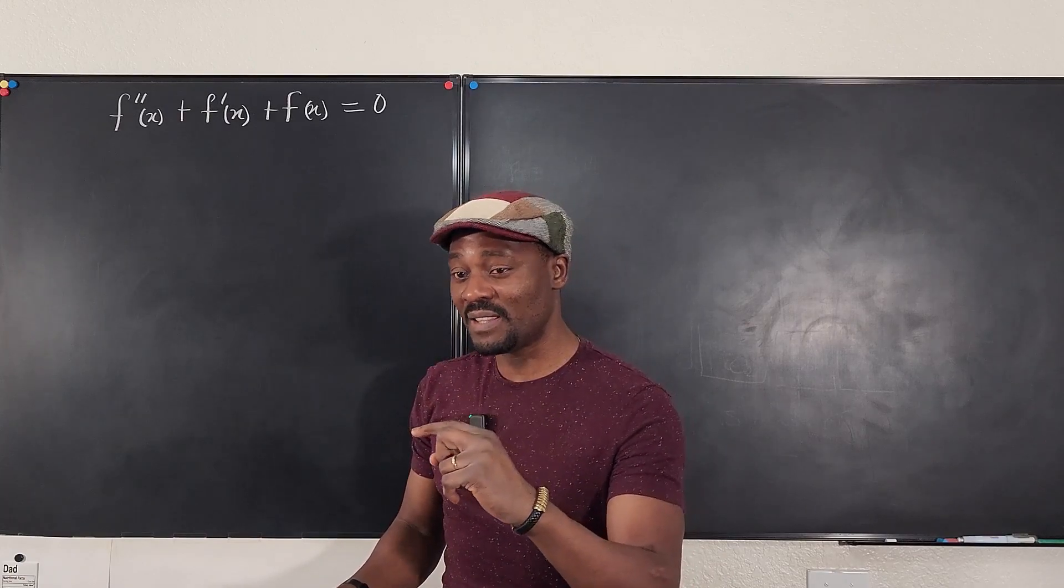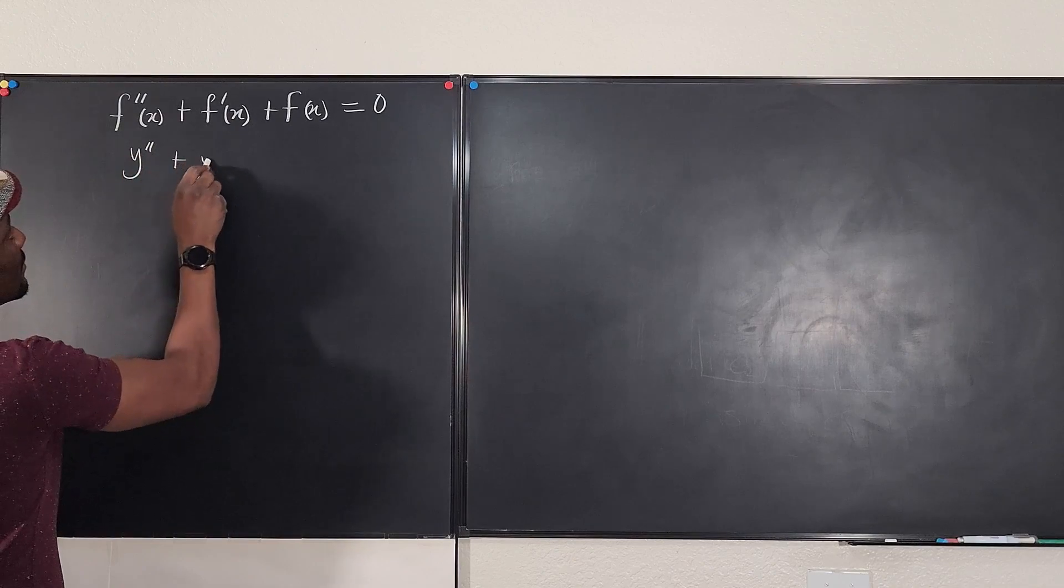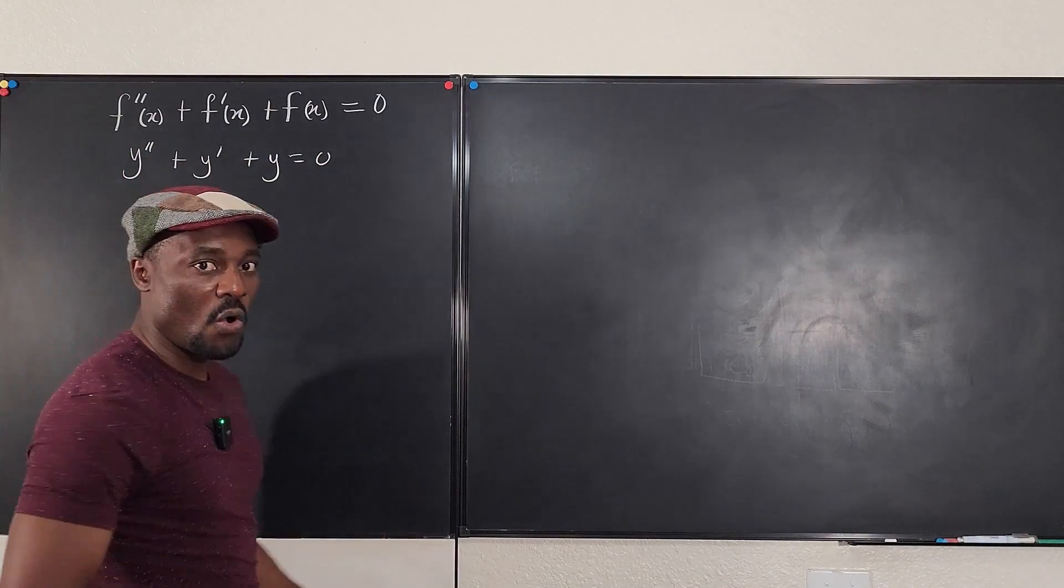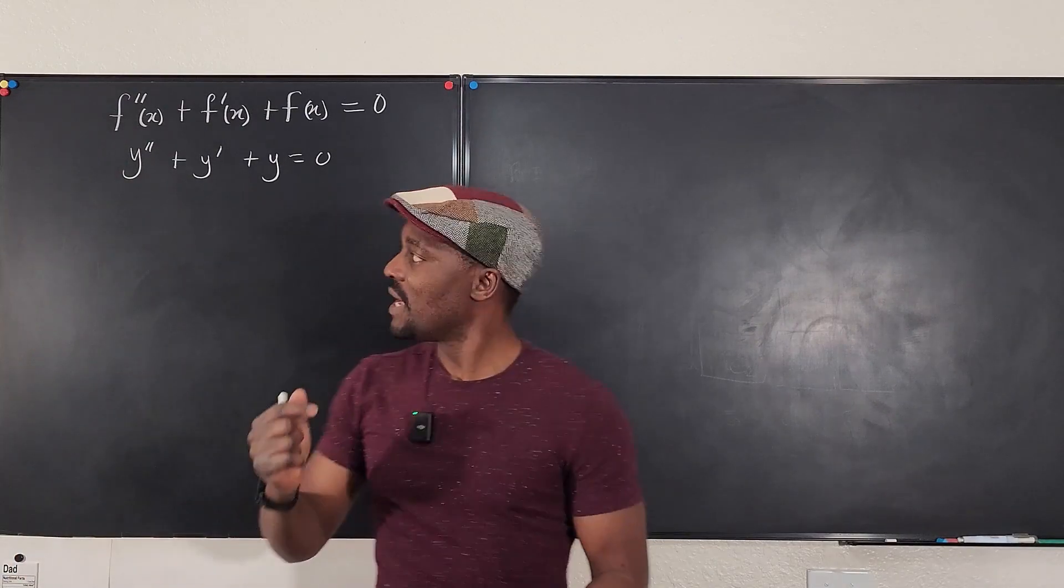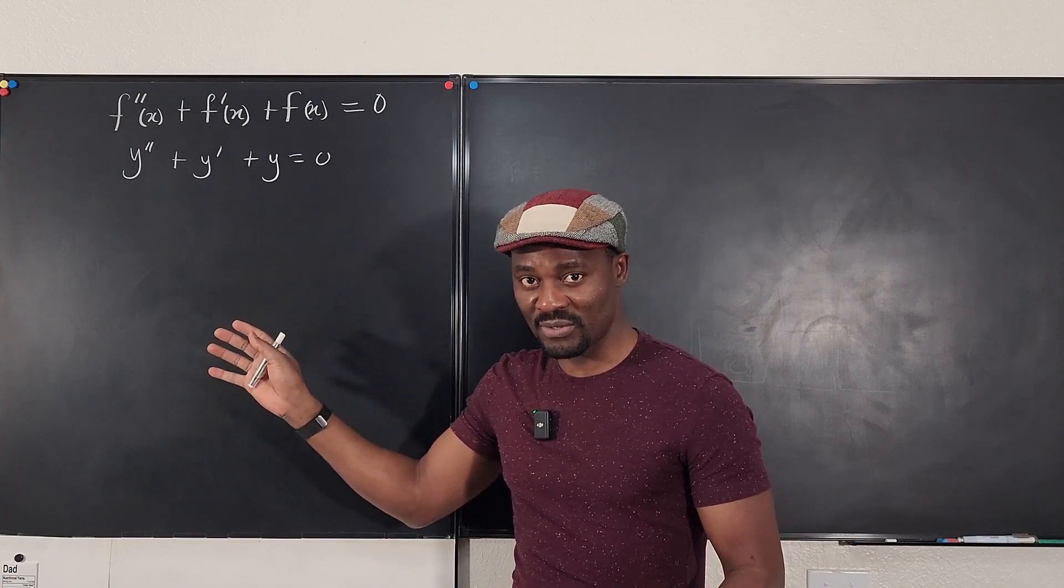Ideally, I should have written this this way. As you can see, it's all the derivatives of y and y. There is no x. So you say this is an autonomous differential equation.